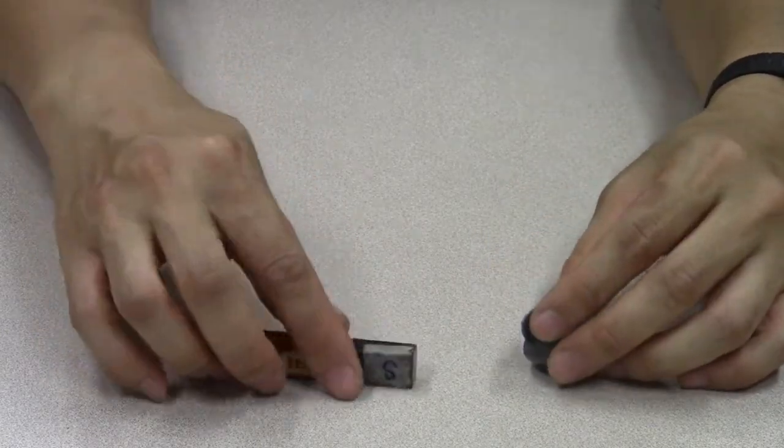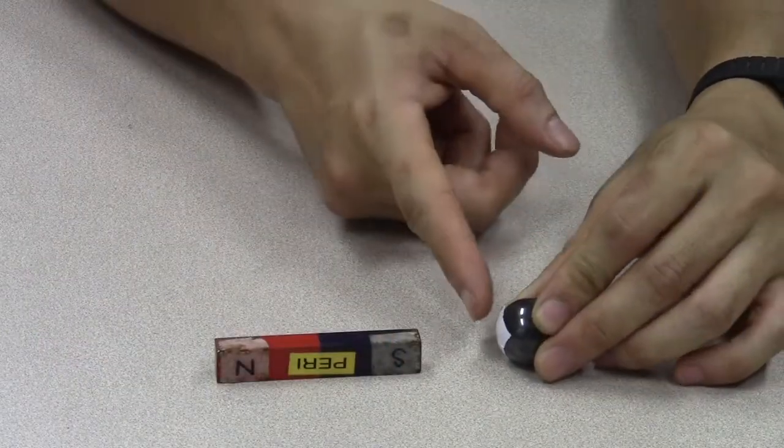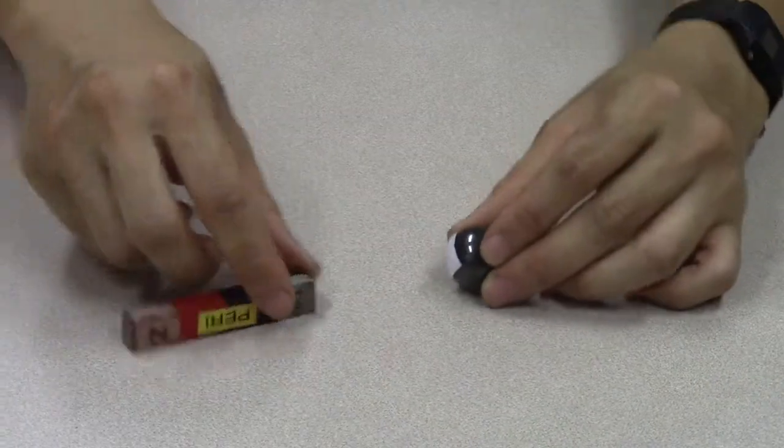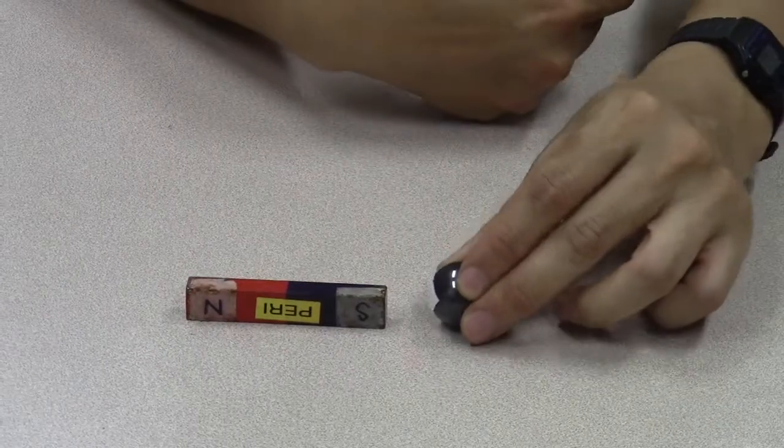Let me show you this. This is the south pole of this magnet. If I bring this end of the ball magnet near to it, it will push it away. It's repelling. So this must also be a south pole.